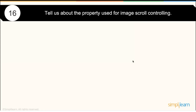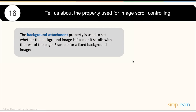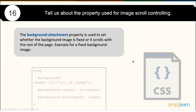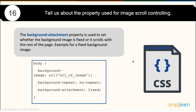How can you control image scrolling — keeping an image fixed while the rest of the page scrolls? This is achieved using the background-attachment property. You set background-repeat: no-repeat and background-attachment: fixed, so that when you scroll down, the image does not scroll. That is the benefit of image scroll control.